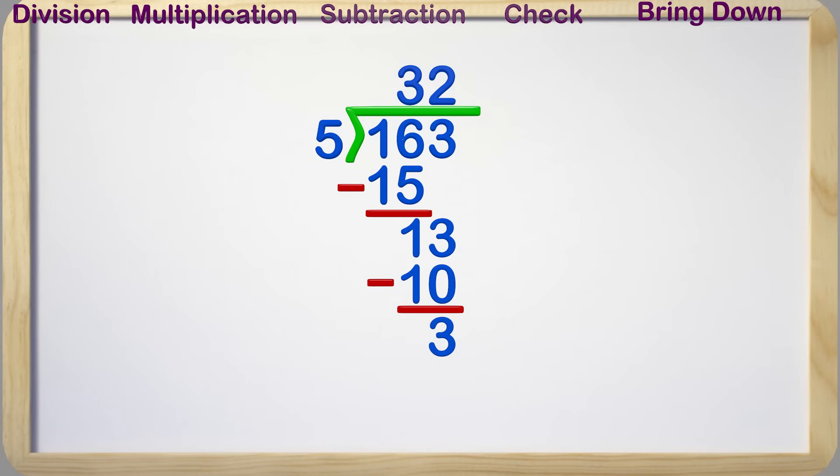But we still have the 3 at the bottom as our remainder. What do we do with the 3? We write it up above with an R in front of it. We now have our answer. 32 with a remainder of 3. We did it!